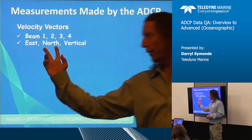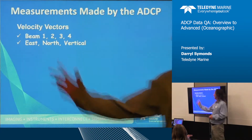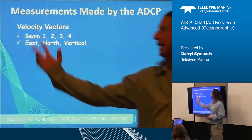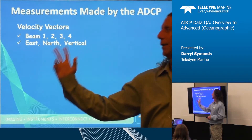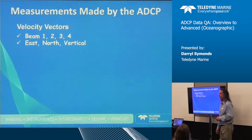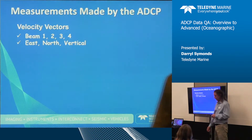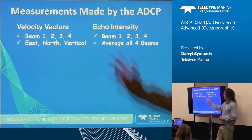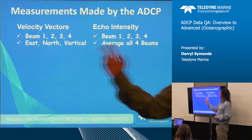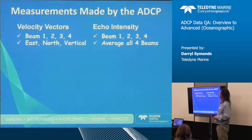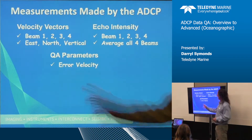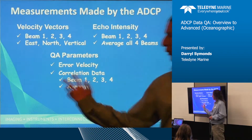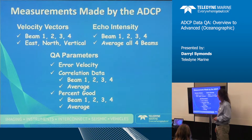We do all these calculations in software, or the instrument can do it. In the Sentinel-V you always collect this data in beam format; in the Workhorse you collect this data inside the system, and the reason for that is just because of space on record. We also collect echo intensity on the four beams, and in software we can create an average of the four beams for each bin. Quality parameters include error velocity — which is created from the beam velocities — correlation data, and percent good.